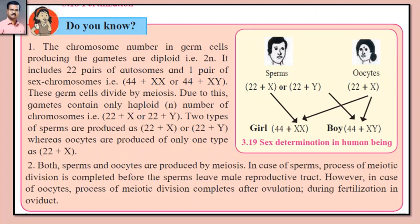Yugmak tayaar karanaarya peshimadhe gunasutraanchi sankhya dvigunit manje 2n asate. It includes 22 pairs of autosomes and one pair of sex chromosomes, i.e., 44 plus XX or 44 plus XY. Manje o lingi gunasutrach baavees jodi aani ek jodi ling gunasutrachi asate, manje chavechaalis adhik XX kiumva chavechaalis adhik XY ya astat.